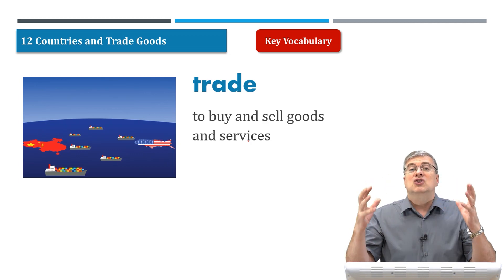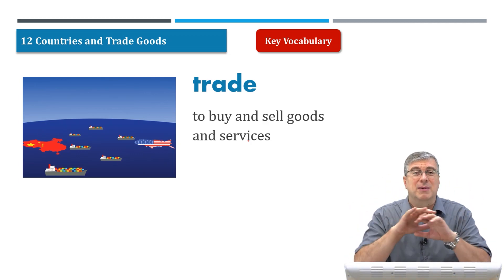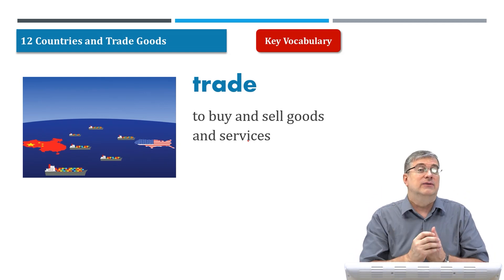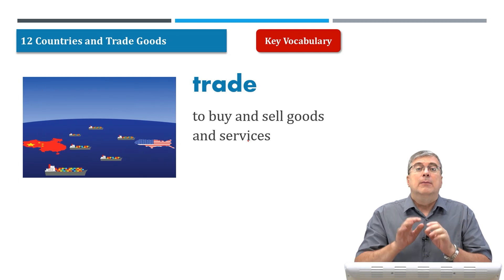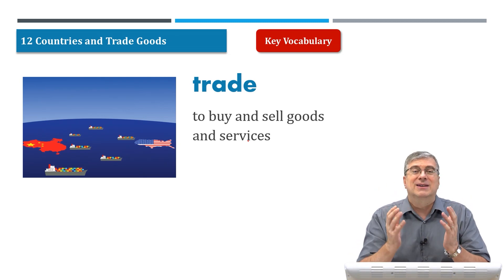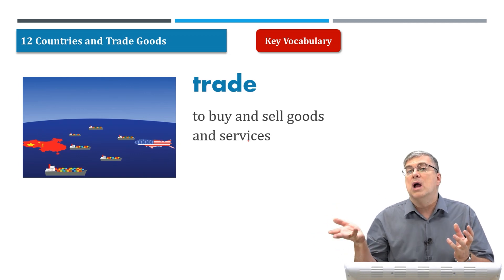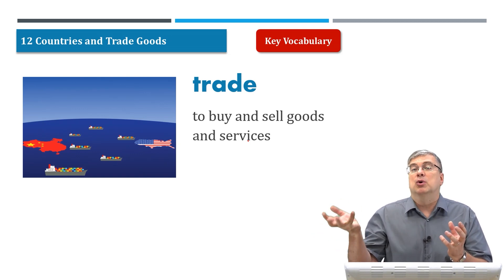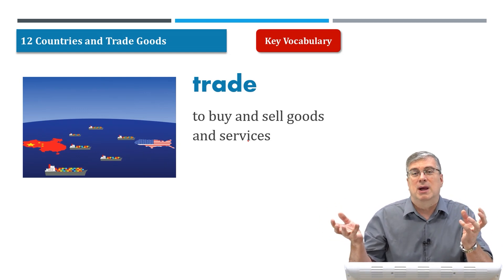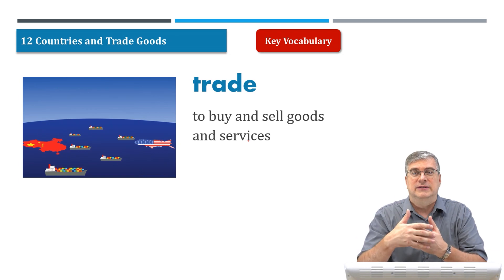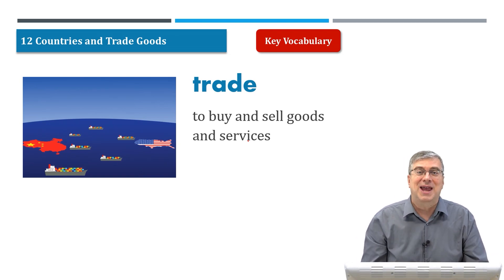But on a bigger scale, to trade means to buy and sell goods and services. Think about a very large scale, like a country making all sorts of goods and services. We talked about goods and services in a previous lesson. A country offers or makes all types of goods and services, and another country might want those goods and services. Of course, they produce their own goods and services that the other country might want. So they trade these things with each other.